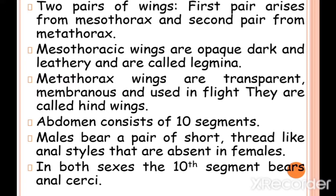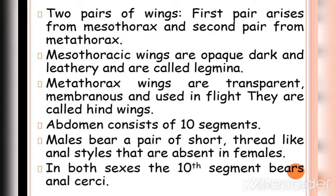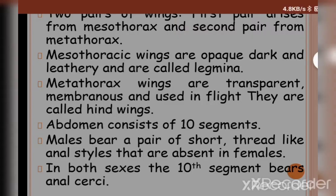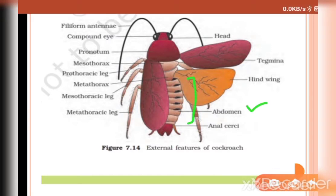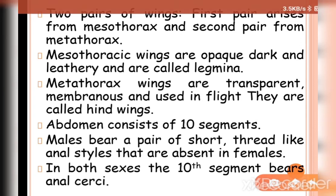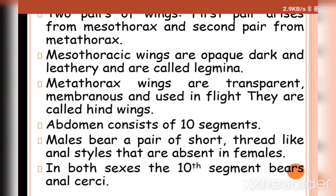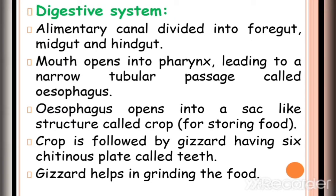The third part, the abdomen, consists of 10 segments. Males bear a pair of short thread-like anal styles that are absent in females. In both male and female, the 10th segment bears anal cerci.